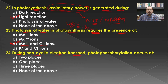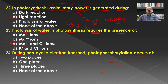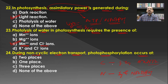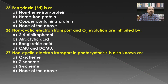During non-cyclic electron transport, photophosphorylation occurs at how many sites? In cyclic photophosphorylation there is formation of ATP at one or two places depending on the plant, while in non-cyclic photophosphorylation, ATP is formed at only one place. Additionally, NADPH is formed in non-cyclic but not in cyclic. Hence during non-cyclic electron transport, photophosphorylation occurs at only one site. Ferredoxin is a non-heme iron-sulfur protein, and A is the correct answer for that question.